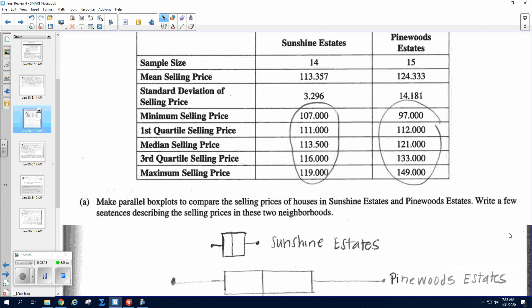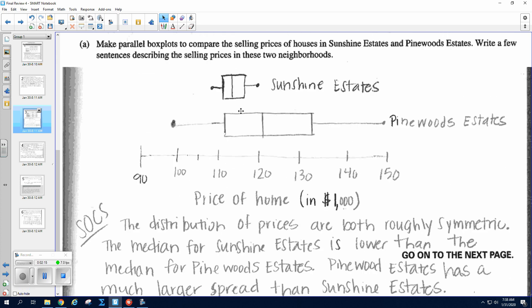So on your box and whisker plots, they will count you off if you don't title which is which. You also need a number line actually numbered, and you also need a title. Be really careful on any graphs that you guys make and be sure that you have titles on any graphs.